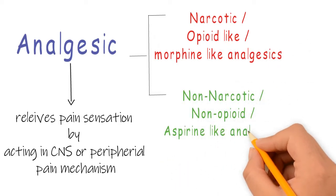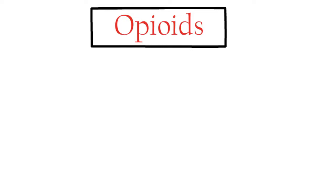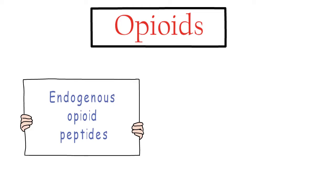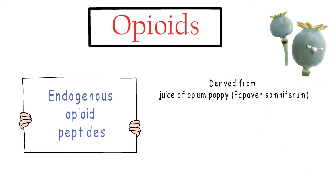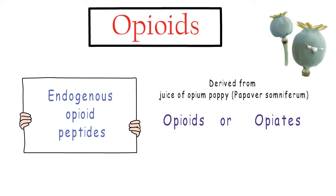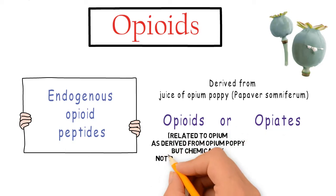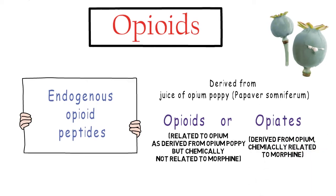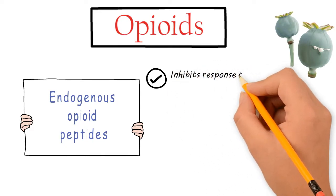Focusing on opioids: opioids are substances whose action is related to endogenous opioid peptides. They are derived from the opium poppy plant, Papaver somniferum. There are two terms to define these substances: opioids, which are derived from this plant but whose structure is not related to morphine, and opiates, which are derived from the same plant and are structurally related to morphine.